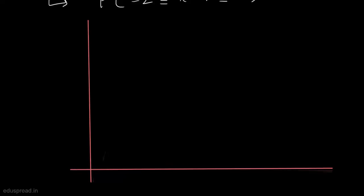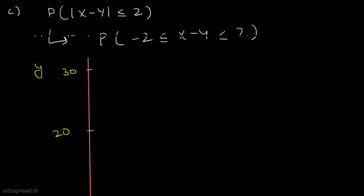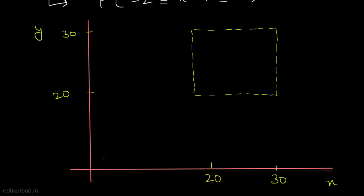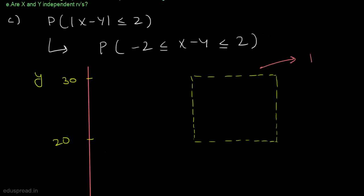On a graph with y on the vertical axis and x on the horizontal axis, x ranges from 20 to 30 and y ranges from 20 to 30. The square region [20,30]×[20,30] has total probability 1. We need to plot the two boundary lines: x − y = −2 (i.e., y = x + 2) and x − y = 2 (i.e., y = x − 2).